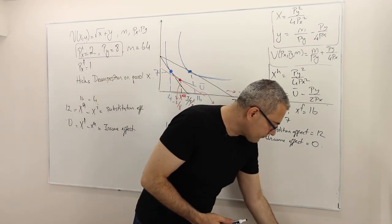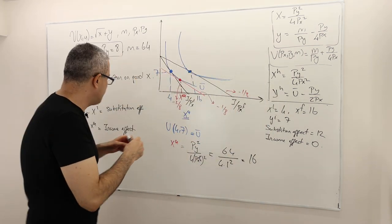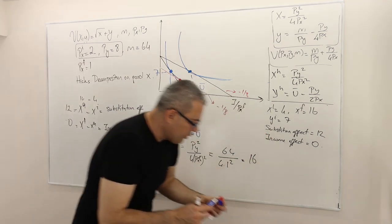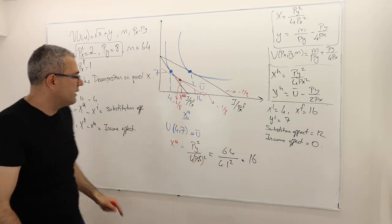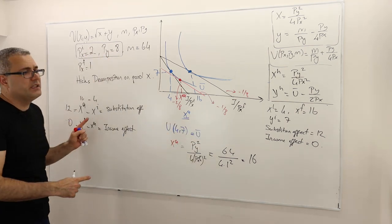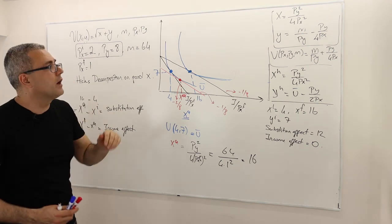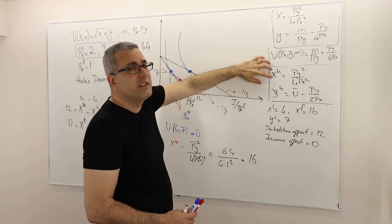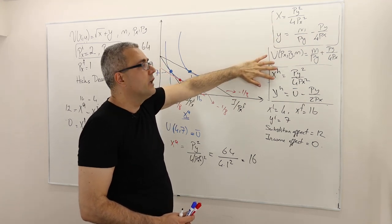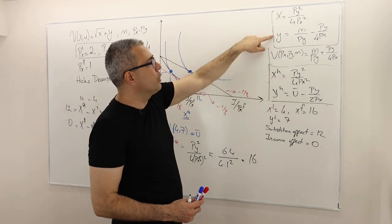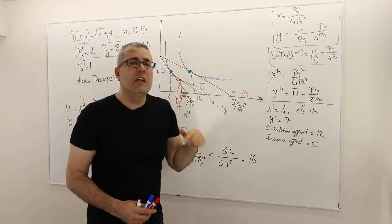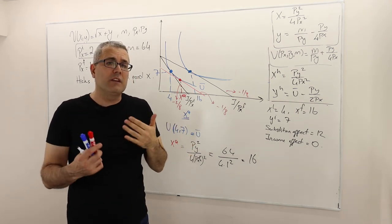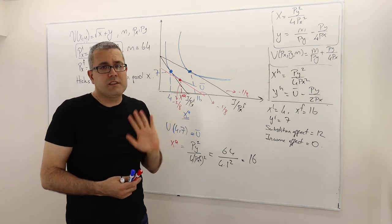All right, so that means, that's it, by the way, this is the Hicksian decomposition. But once again, the reason why we have this substitution and income effect identical in both Hicksian and Slutsky decomposition is simply because the Marshallian demand doesn't depend on income, and the Hicksian demand doesn't depend on the U bar, the utility level. If they were, which is the case in Y, good Y for example, well, then Hicks decomposition, the substitution effect and the income effect would be different in the Slutsky decomposition. But for good X, they are the same.